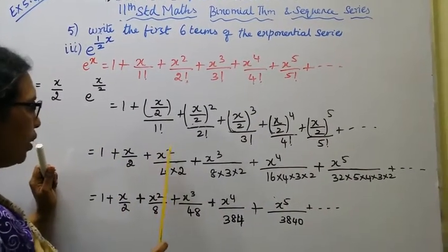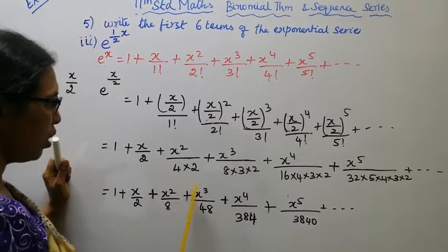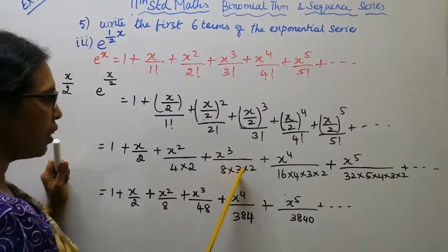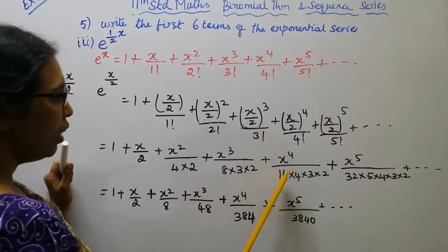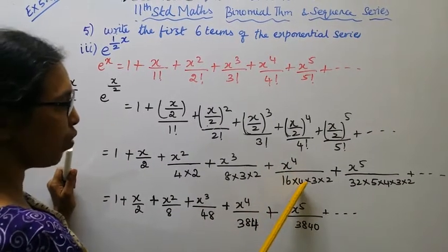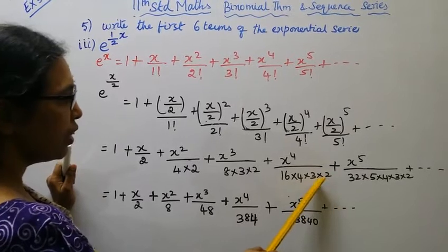equals 1 plus x by 2 plus x square, 4 twos are 8, plus x cube 8, 3s are 24, 24 twos are 48, plus x power 4 by 16, 4s are 64, 64 into 6, 3 twos are 6, 384.